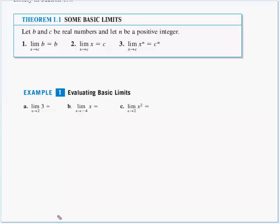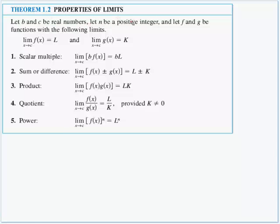The most basic types: just try direct substitution. Theorem 1-2 covers properties of limits. Let b and c be real numbers, n a positive integer, and f and g functions where both limits approach the same number c. The limit of f of x is L and the limit of g of x is K. First: scalar multiple — if we have the limit as x approaches c of b times f of x, we factor out the b and multiply it by L, so the limit equals b times L.